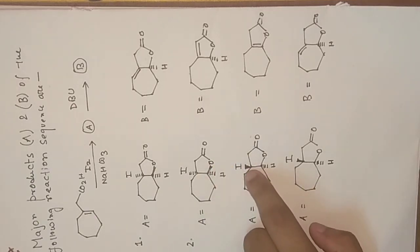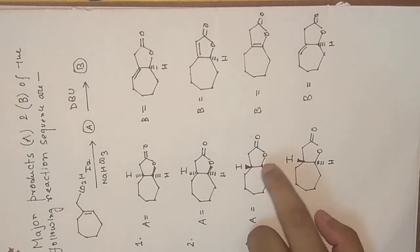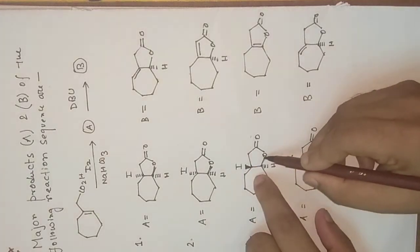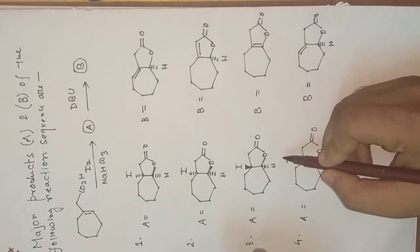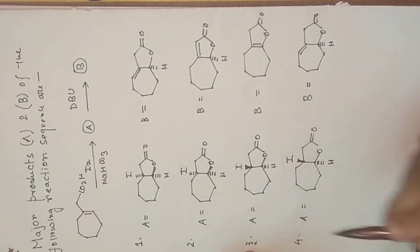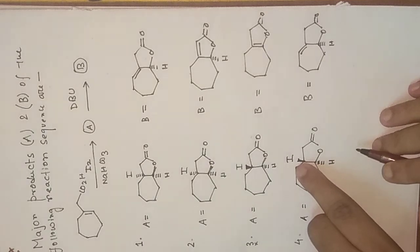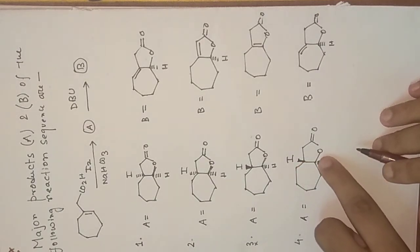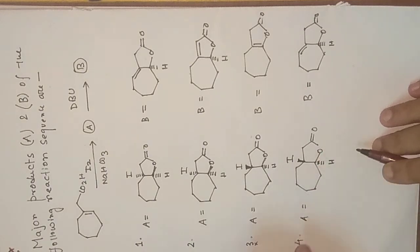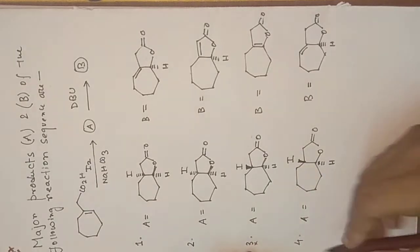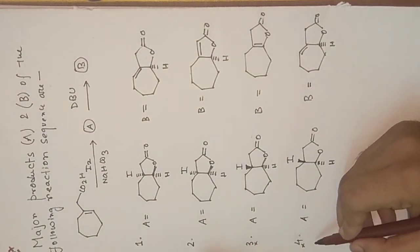But in option three, the iodine is above the plane and the other group is also above the plane, so this product is not possible. Similarly, option four has the iodine above the plane and a group above the plane, so it is also not possible, because in the iodolactonization reaction, always the trans product is obtained. So we eliminate options three and four, leaving options one and two.